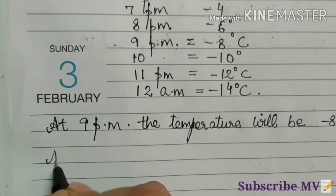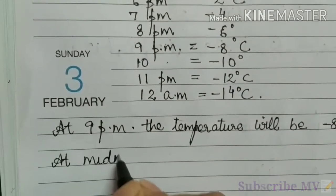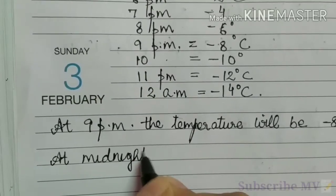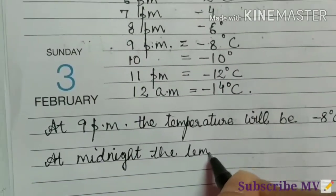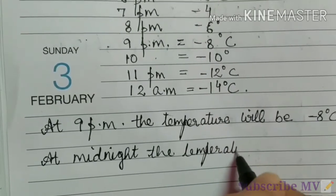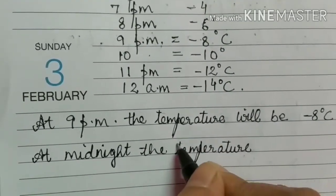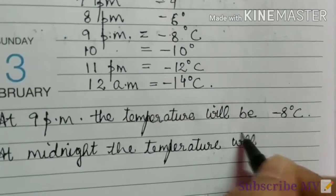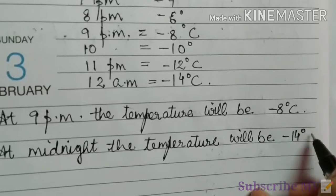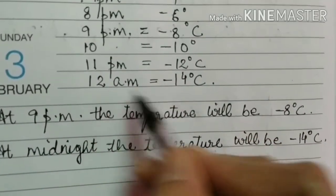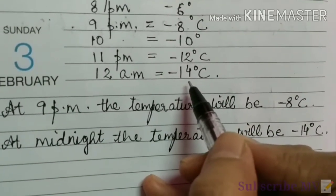at midnight, the temperature will be minus 14 degree Celsius. 12 a.m. it is minus 14 degree Celsius.